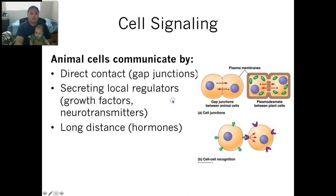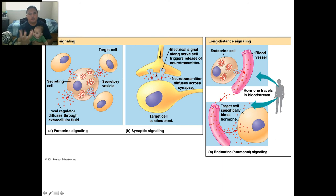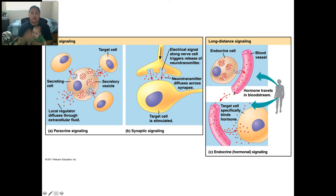These are examples from the last slide. Local signaling: a cell secretes stuff in vesicles and it goes out to neighboring cells, or we talked about a synapse — here are the dendrites of another cell and the axon, emitting neurotransmitters to get a target cell to do something. For long distance, something from the top of your body needs to tell something to the bottom, and it transfers through the bloodstream, through the veins and arteries, to get to a cell that's very far away.